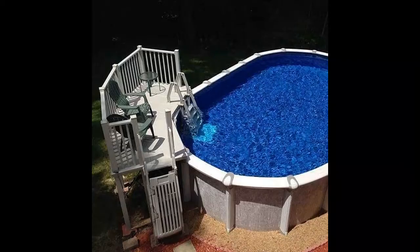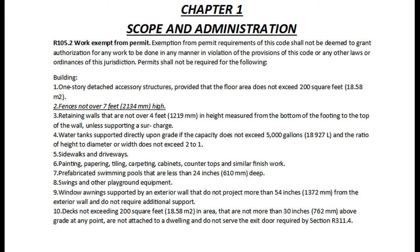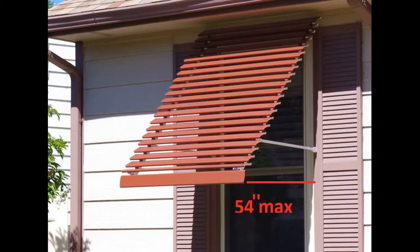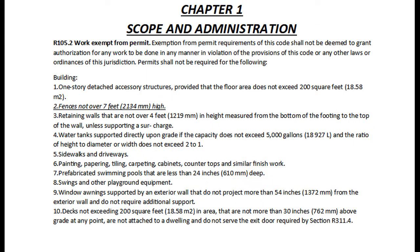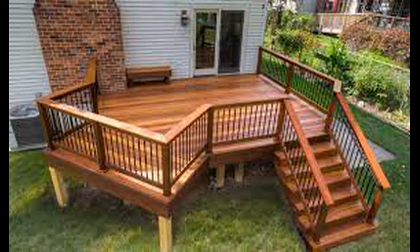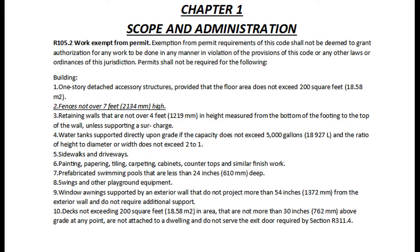7. Pre-fabricated swimming pools that are less than 24 inches deep. 8. Swings and other playground equipment. 9. Window awnings supported by an exterior wall that do not project more than 54 inches from the exterior wall and do not require additional support. 10. Decks not exceeding 200 square feet in area, that are not more than 30 inches above grade at any point, and are not attached to a dwelling, and do not serve the exit door required by Section R311.4.